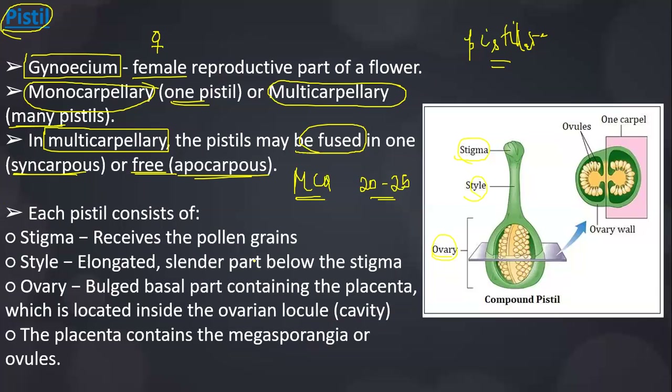So: gynoecium is the female reproductive part of a flower. One pistil = monocarpellary; many pistils = multicarpellary. In multicarpellary flowers, pistils may be fused — syncarpous — or free — apocarpous. Remember: fused means syncarpous, free means apocarpous.